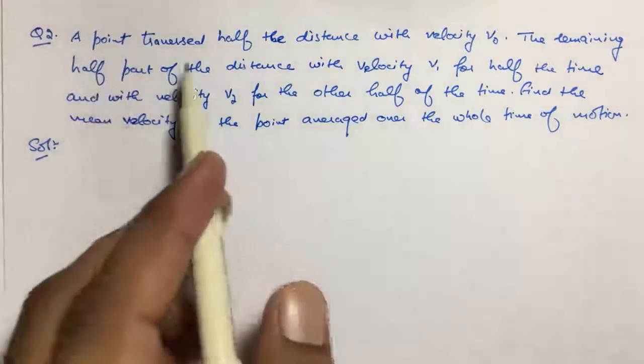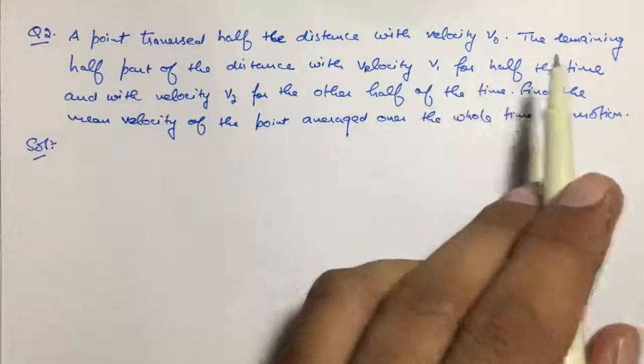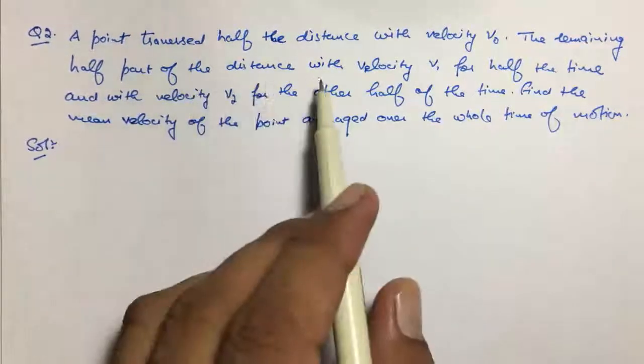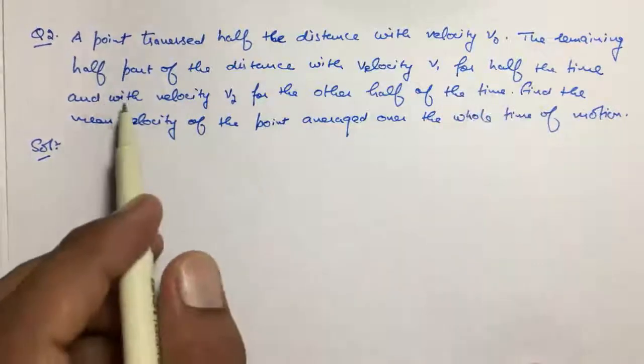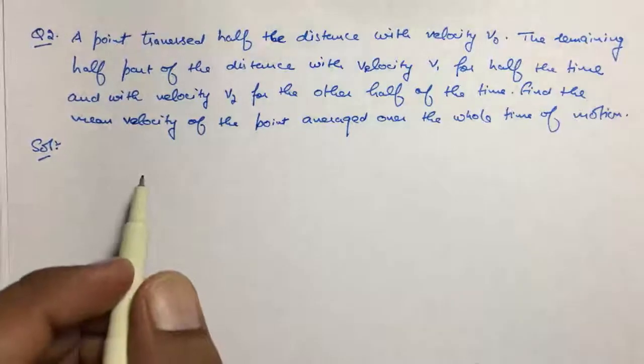The question is: a point traversed half the distance with velocity V₀, and the remaining half part of the distance with velocity V₁ for half the time and with velocity V₂ for the other half of the time. Let's formulate the problem.